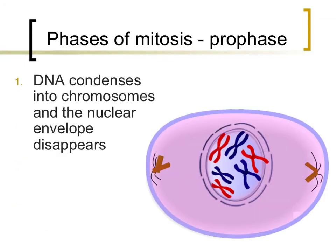The first phase of mitosis is entitled prophase. Prophase helps prepare DNA in the cell to divide equally. Two important things occur during this phase. First, DNA condenses from chromatin into chromosomes. Second, the nuclear envelope starts to dissolve.